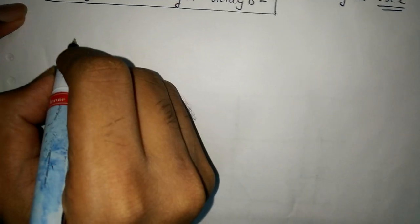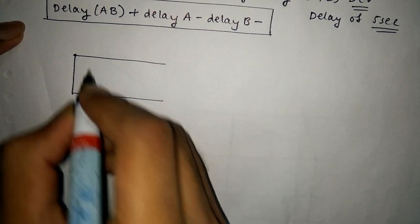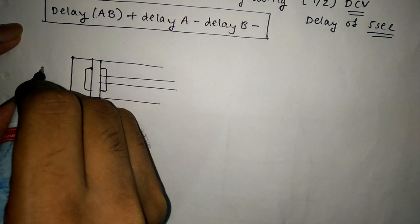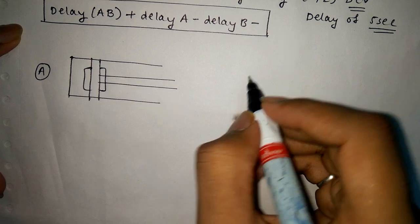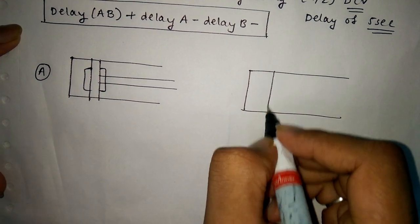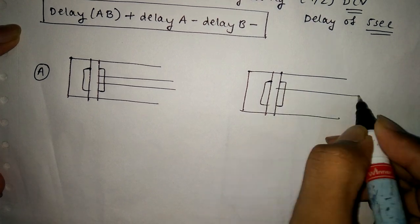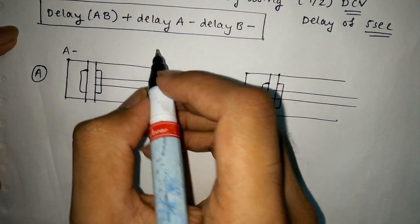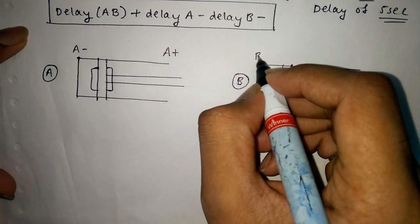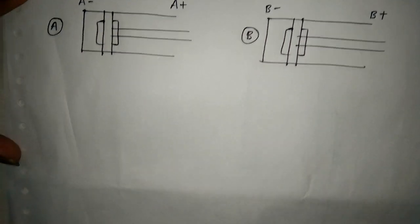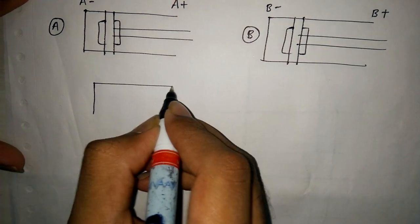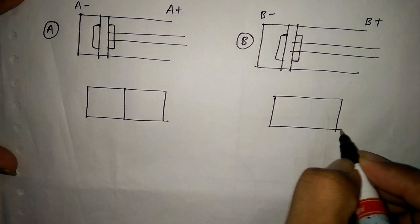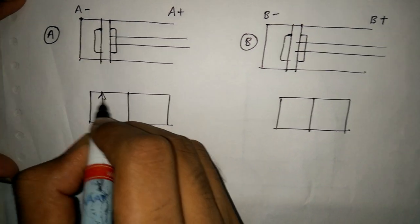First, we have to draw the double acting cylinder. They will mention to draw the double acting cylinder for both A and B. This is for B-, this is A-, this is A+, B-, B+. Then we draw the 4/2 valve — 4/2 means 2 boxes.